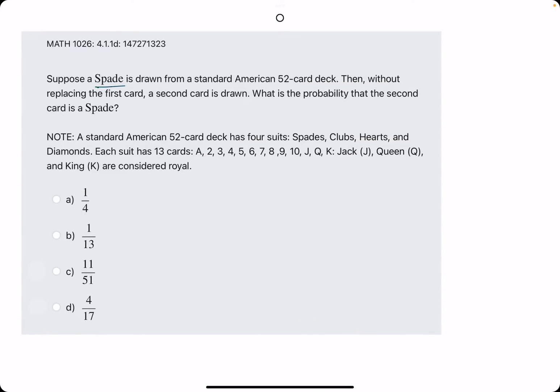Suppose a spade is drawn from a standard deck. So spades make up one-fourth of the deck. So 13 over 52. 13 spades out of 52 total, or one-fourth, is the probability of drawing one spade. Then, without replacing the first card, a second card is drawn from the now 51 cards. What is the probability that the second card is a spade?